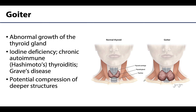Occasionally there can be abnormal growth of the thyroid gland, referred to as a goiter. Goiters result most typically from a lack of iodine, or less frequently due to an autoimmune disease. Looking at this image, you can really see how a goiter can potentially compress deeper structures or structures more lateral than where the thyroid gland typically extends, which could obstruct blood flow or cause other issues.